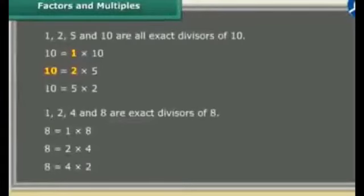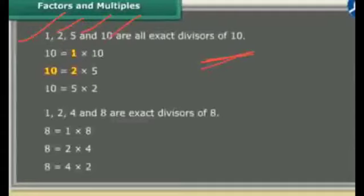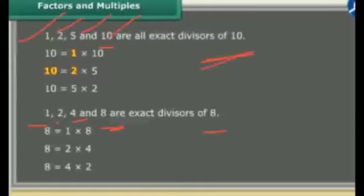Now we will see another thing. 1, 2, 5 and 10 are factors of 10. Here, 10 is equal to the given number, and the other numbers — 1, 2, 5 — are less. Same here, 1, 2, 4 are less than 8, and 8 is equal to 8. Therefore, factors are always smaller than or equal to the number.